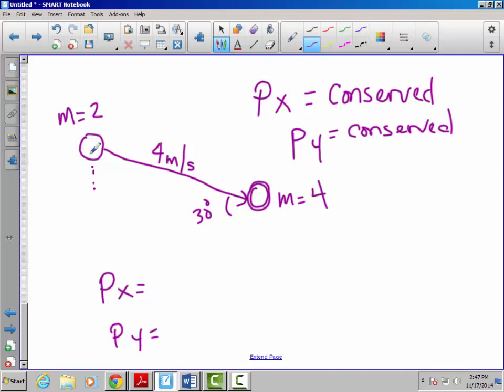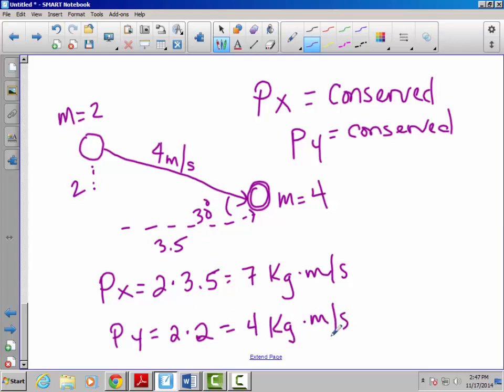So the momentum in the x direction in this case is going to be 2, because that's his mass, times whatever the x component of its velocity is. So that would be times cosine of 30, which is 3.5. So in this case, the momentum in the x direction is 7 kilograms meters per second. And the momentum in the y direction should be 2 times 2, because that's going to be this side. And this is 3.5, which is going to be 4 kilograms meters per second.